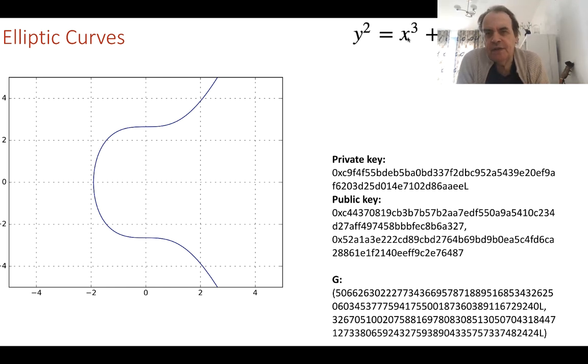This is an elliptic curve. We have this type of equation here: y squared is equal to x cubed plus ax plus b, and then we have it within a finite field, so it's the mod of p.